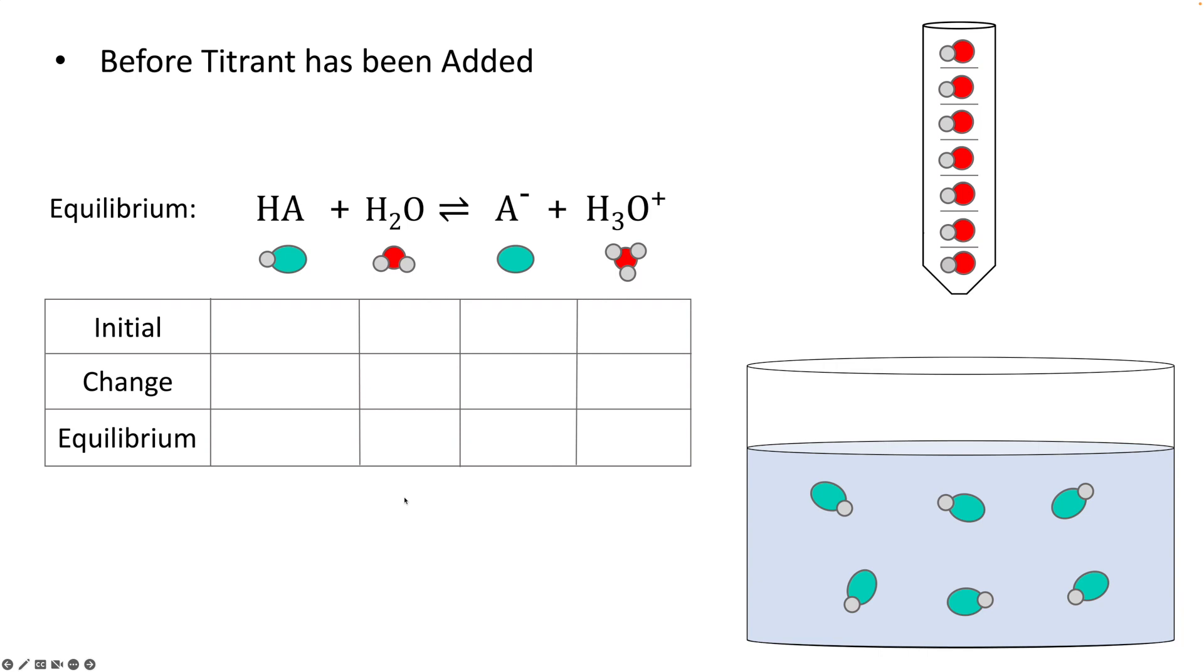This is a thing you've done before. You set up an ICE table. You have the initial concentration of HA. It dissociates a little bit. At equilibrium, you have slightly less HA and small concentrations of A minus and H3O plus. You set up the equilibrium constant expression, plug in things in terms of X, do your solving. Remember that K sub A is a very small number, so X is going to be small by comparison to the HA concentration, which can help simplify your calculations.